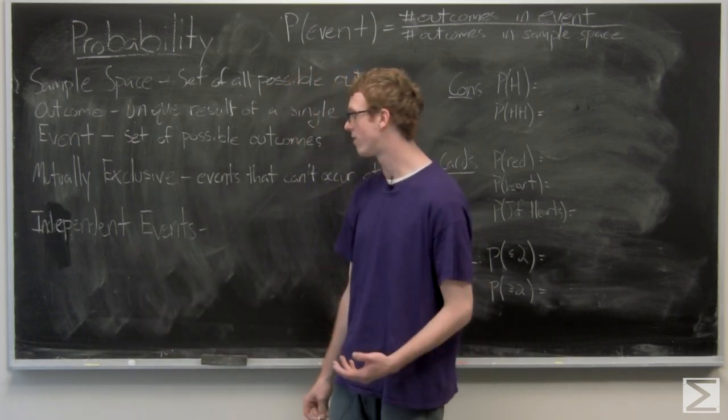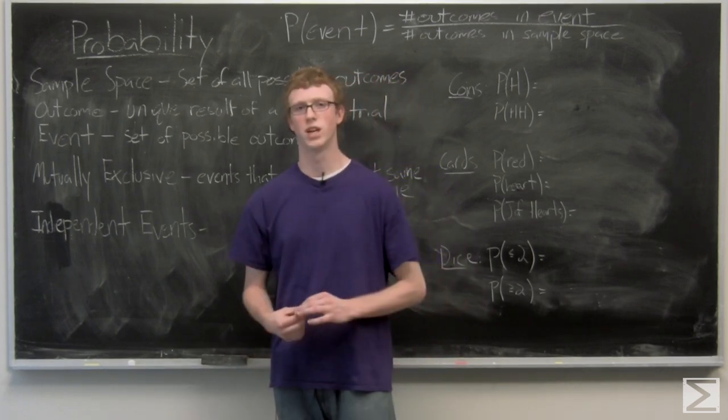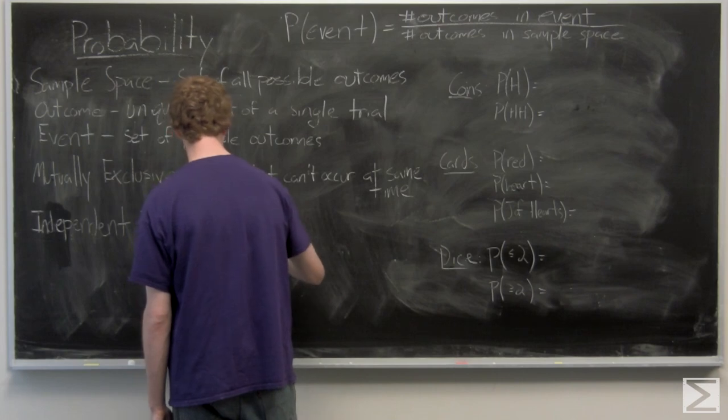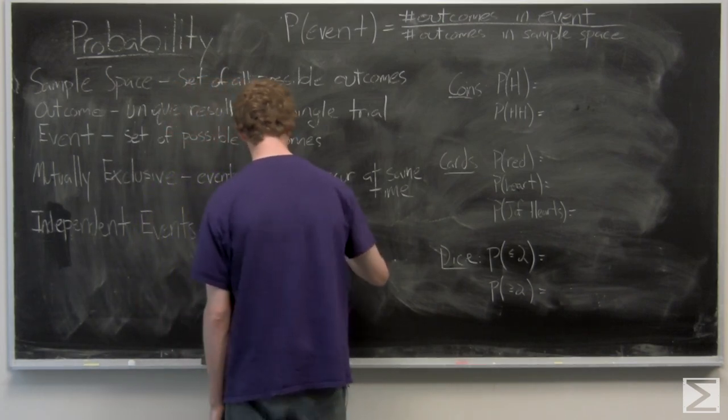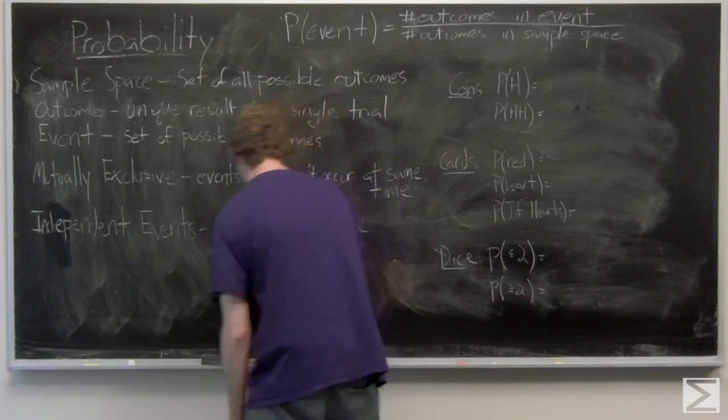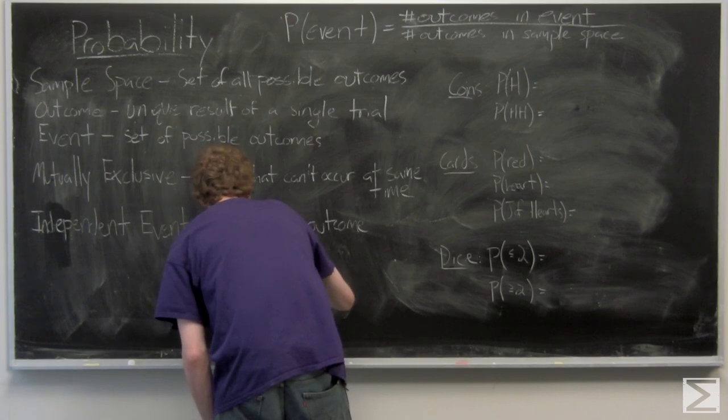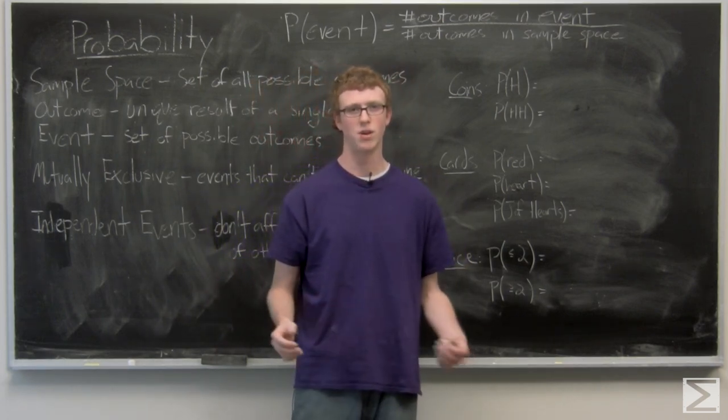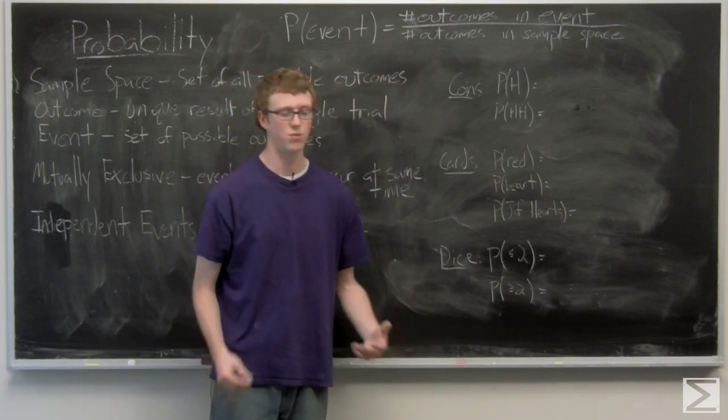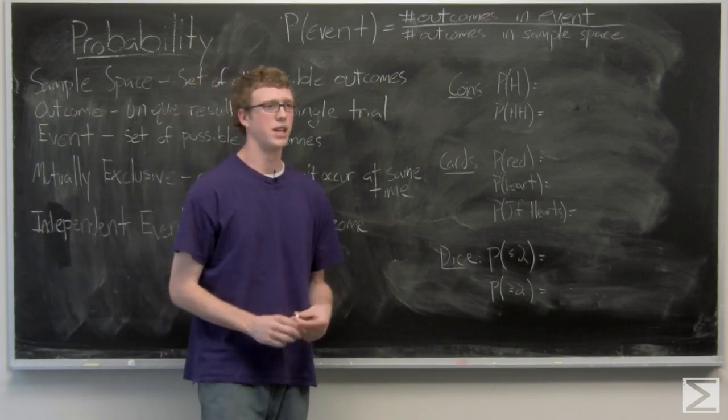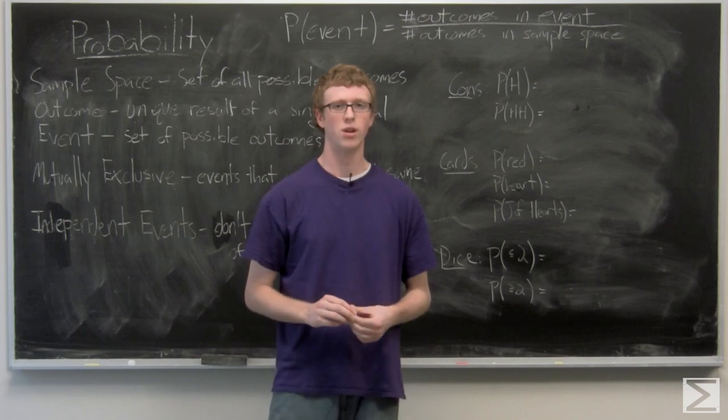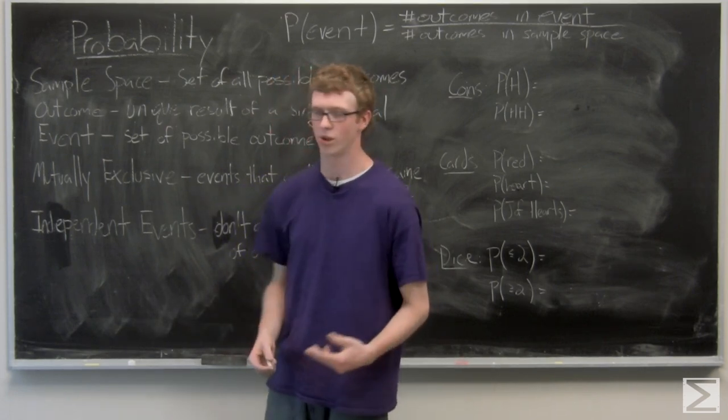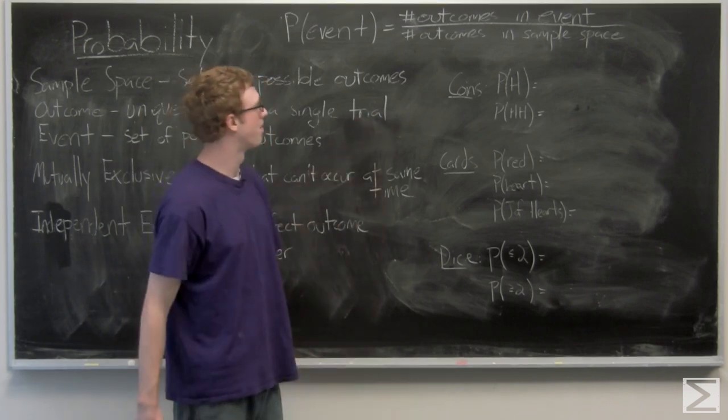Independent events are events that don't affect the outcome of the other. So, say two dice rolls, those are independent events. Two dice rolls are independent events because the first dice roll can be any number, and the second dice roll can be any number. And it doesn't matter which is which. So they're independent. We can take a look at, say, two dice rolls, we get a one on the first dice roll. So we can't get a one on the next one, we make a rule that says that those are no longer independent events, because it depends on what you get on the first dice roll. So let's just take a look at some basic probability.